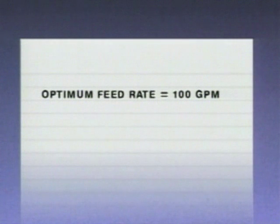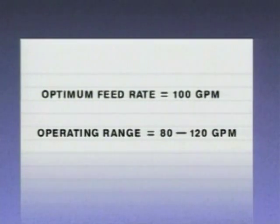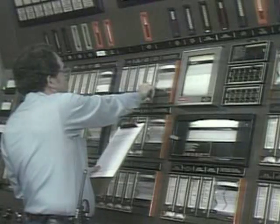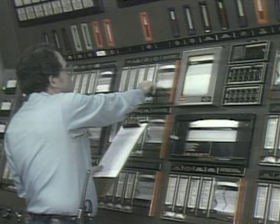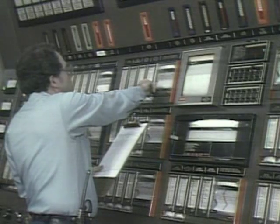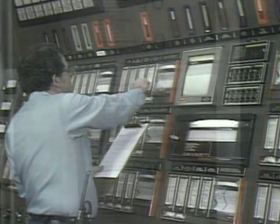For example, a system may have an optimum feed rate of 100 gallons per minute and an operating range of 80 to 120 gallons per minute. The way the feed rate is kept within the specified range depends on the system.